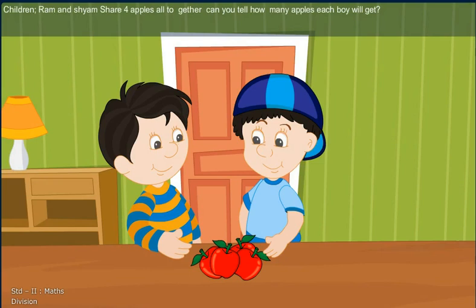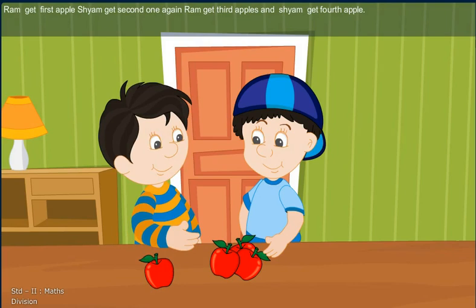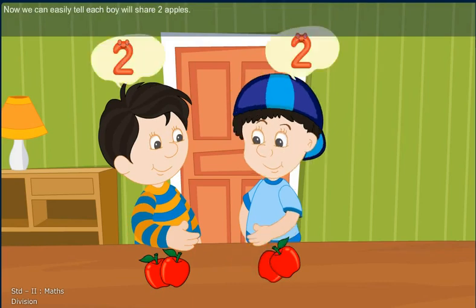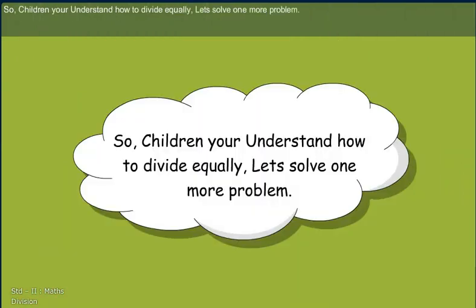Can you tell how many apples each boy will get? Ram get 1st apple, Shyam get 2nd one, and Ram get 3rd apple, and Shyam get 4th apple. Now we can easily tell each boy will share 2 apples. So children, you understand how to divide equally? Let's solve one more problem.